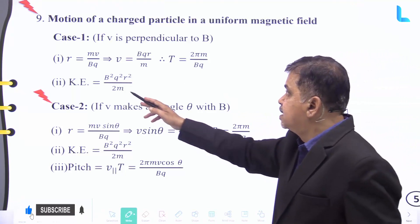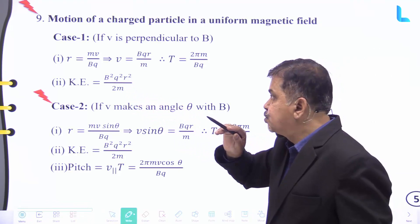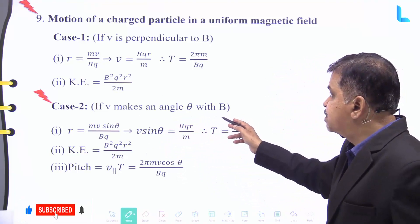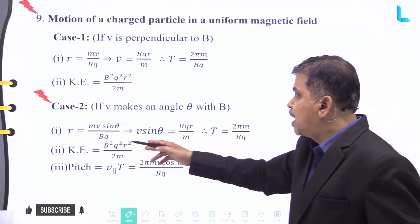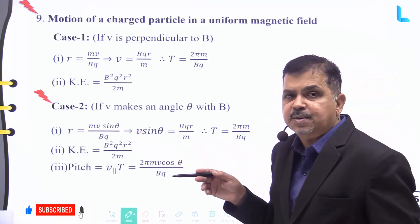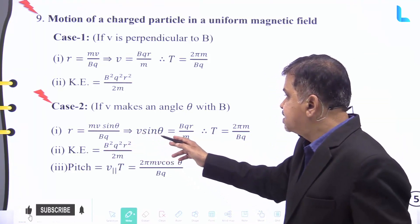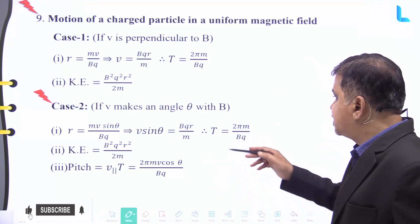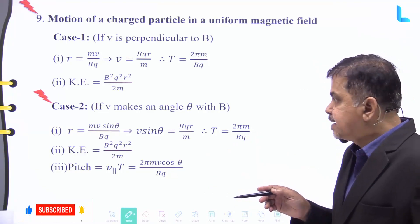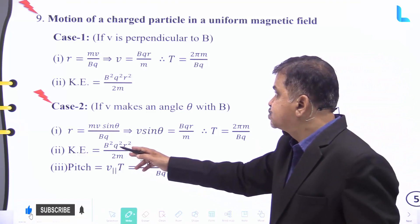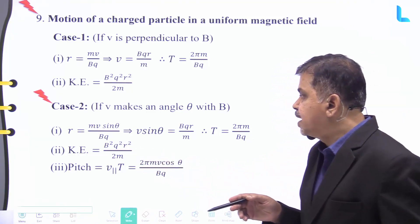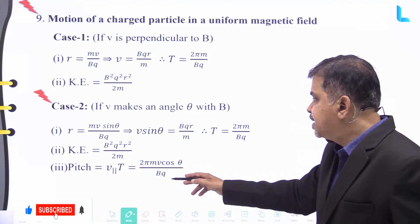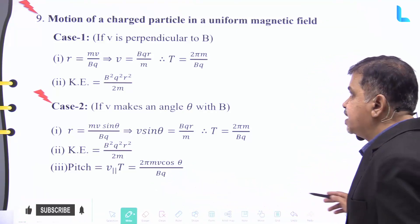The kinetic energy in case one is given by B squared q squared r squared divided by 2m. Case two: if v makes an angle theta with B, then r equals mv sine theta divided by Bq. This implies v sine theta equals Bqr divided by m. Therefore T equals two pi m divided by Bq. The kinetic energy is B squared q squared r squared divided by 2m, and the pitch is given by two pi mv cos theta divided by Bq, which is also equal to v times T.